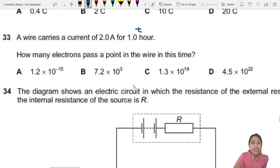And how many electrons pass a point in the wire in this time? How many electrons? They're basically asking you, how many marbles pass through this point in the wire? So you need to think of, let's use the word N for number of electrons. We're trying to find number of electrons.